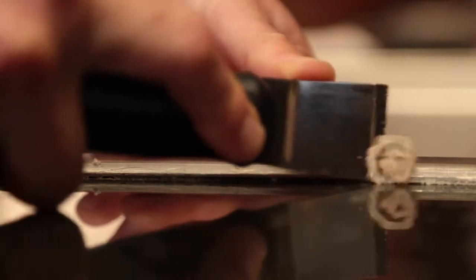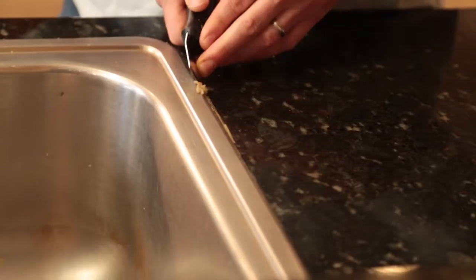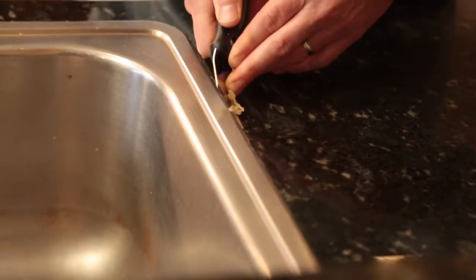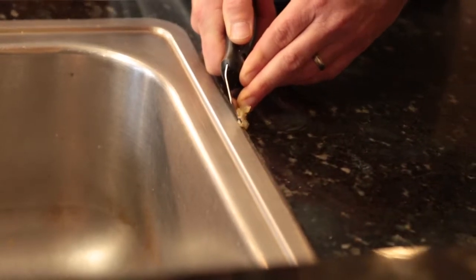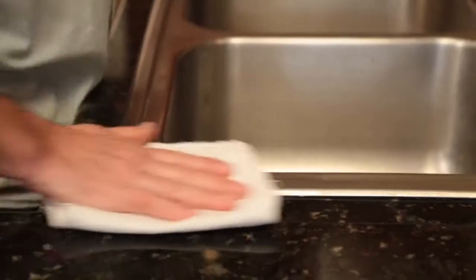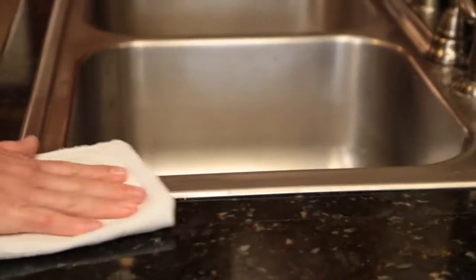Carefully cut or scrape away the old caulk using a utility knife or scraper. Be careful not to scratch the finish of the sink or countertop as you scrape. Pull out the loose caulk and wipe away any material.